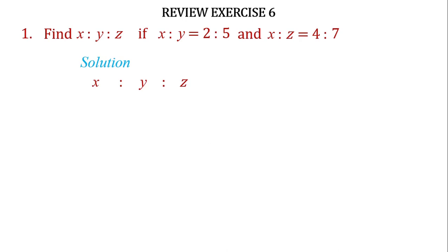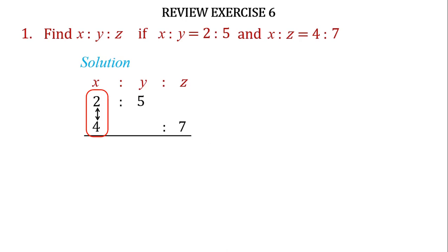The ratio of X to Y is 2:5 and the ratio of X to Z is 4:7. First, write XYZ, then put the ratio of X and Y — it is 2:5. After that, write the ratio for X and Z — it is 4 and 7. Now multiply the value for X; it is a vertical value which we already learned in our previous lecture of this unit. It is 2 × 4.